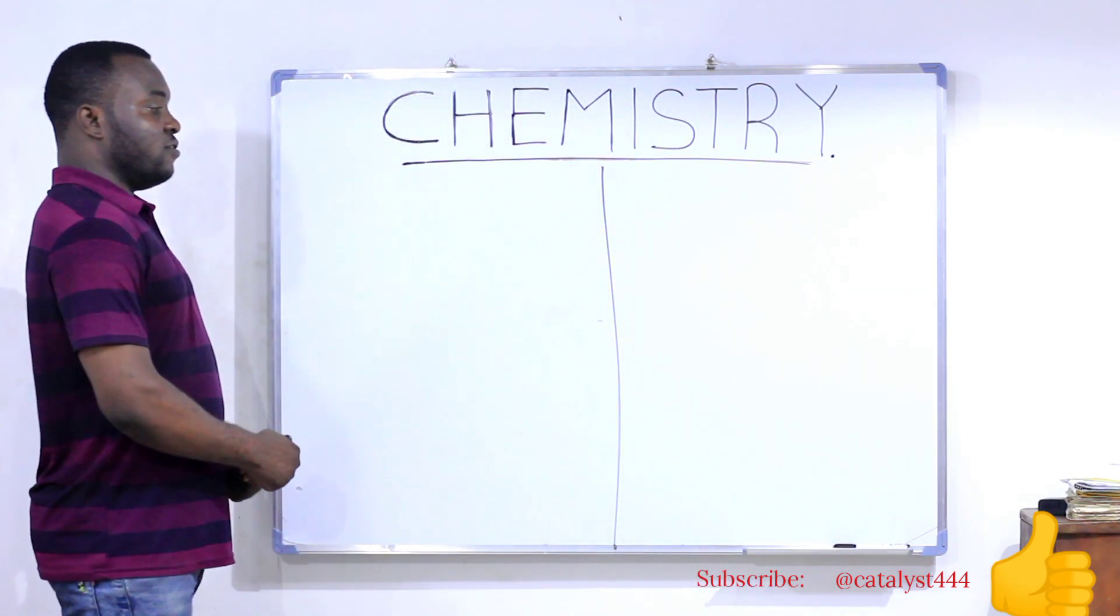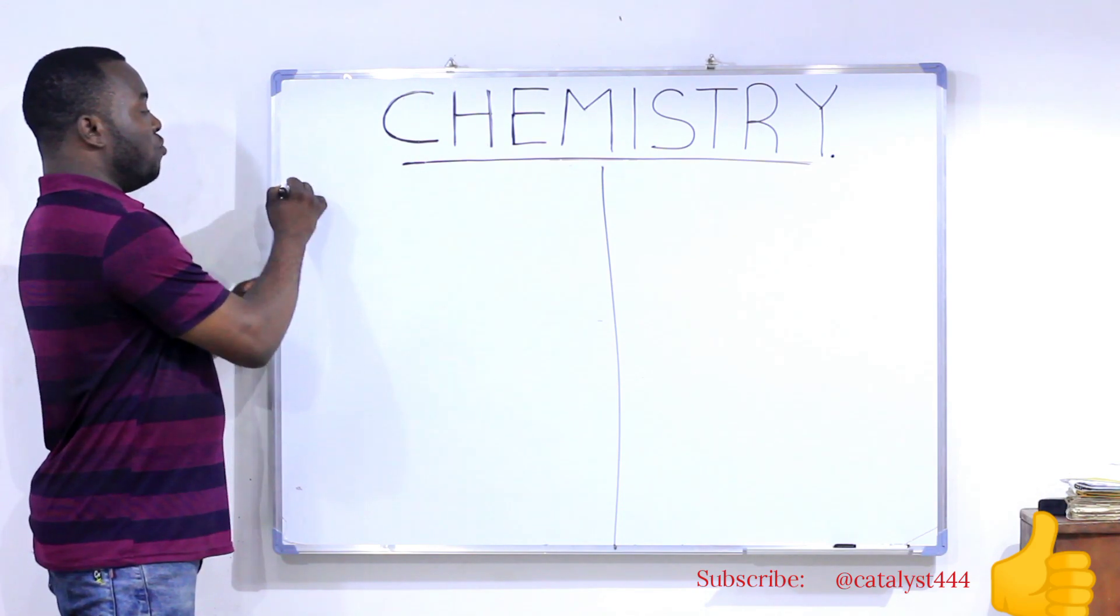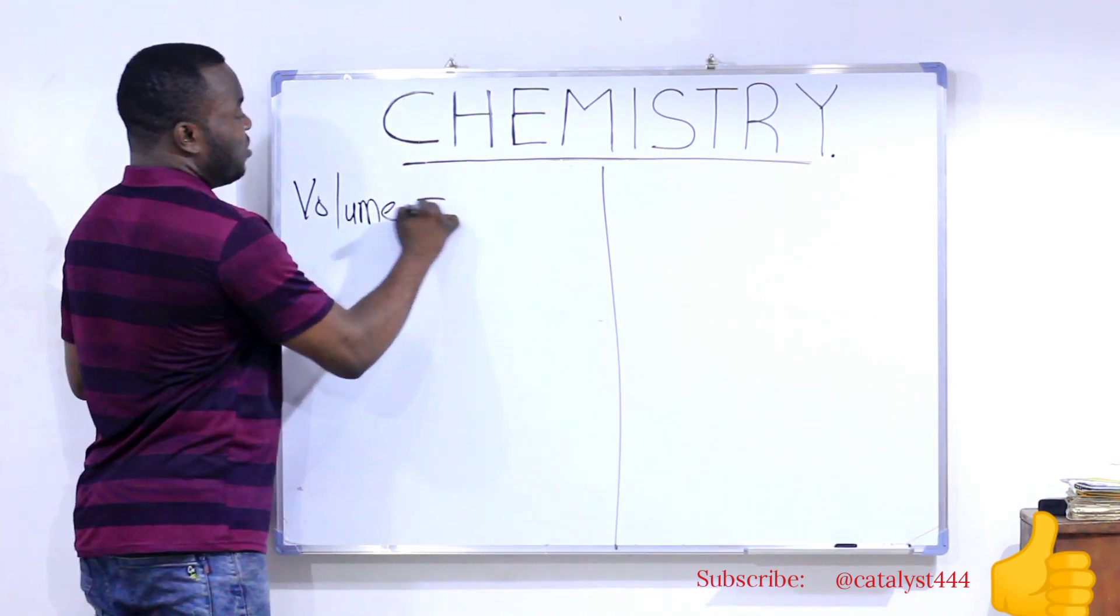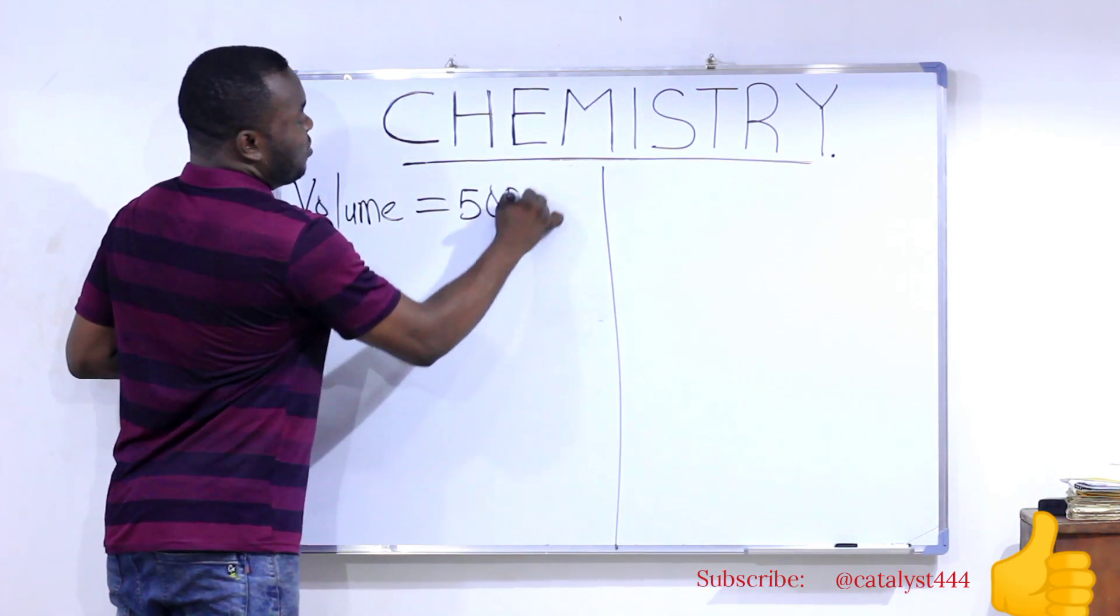Now, let's solve this. All you need to do is very simple. Find out the volume given to you in the question. The volume of the solution given is 500 cm³.